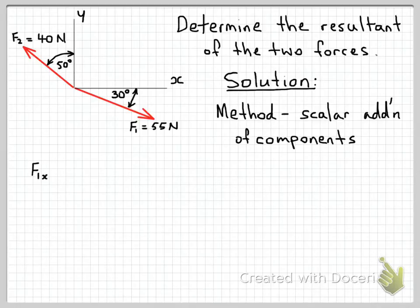The first step will be to find the component of the force F1 in the x direction. Because we have a right angle triangle here, we know that the magnitude of this scalar component here will be F1 cos 30 degrees, which is 47.63 Newtons.